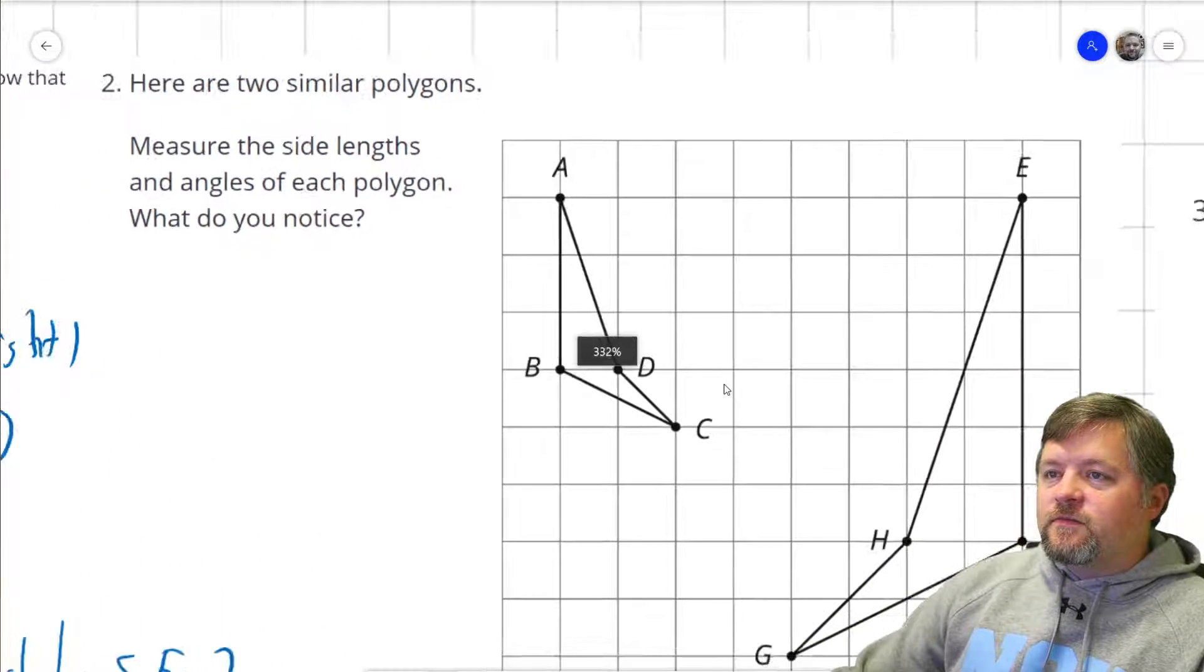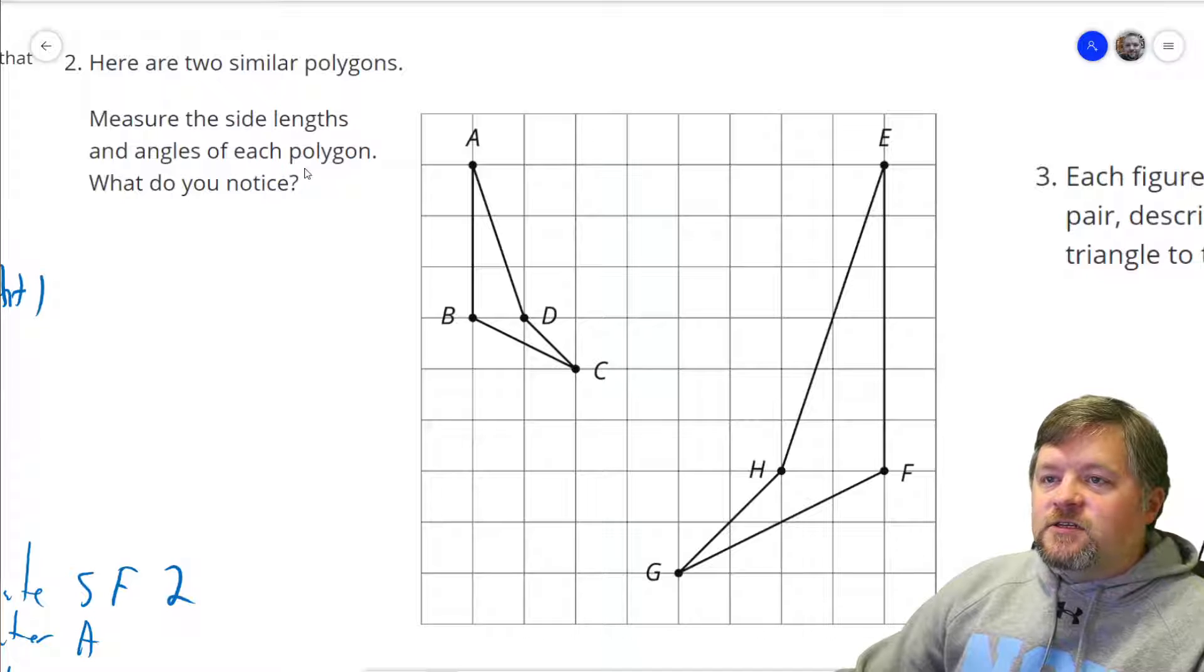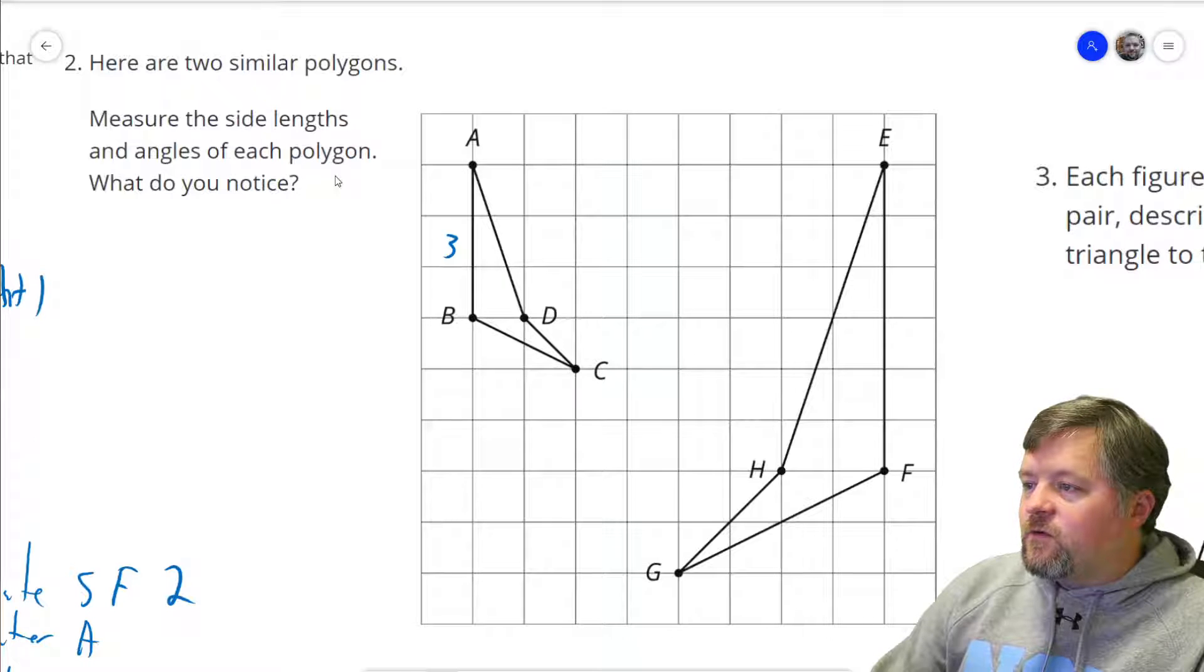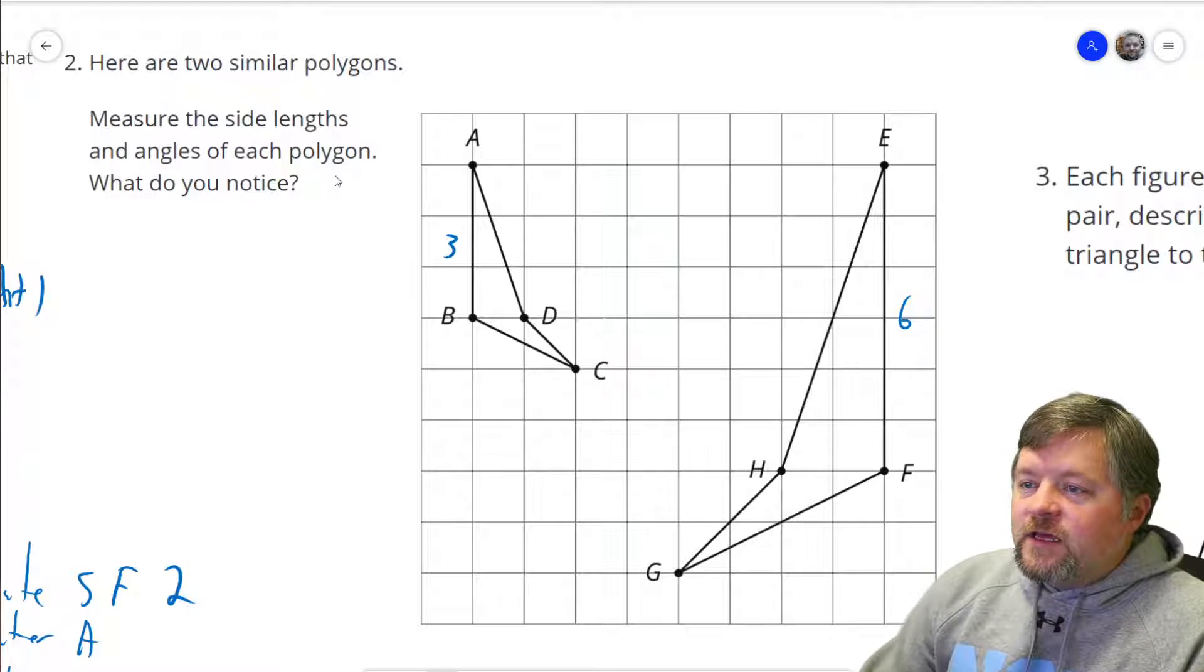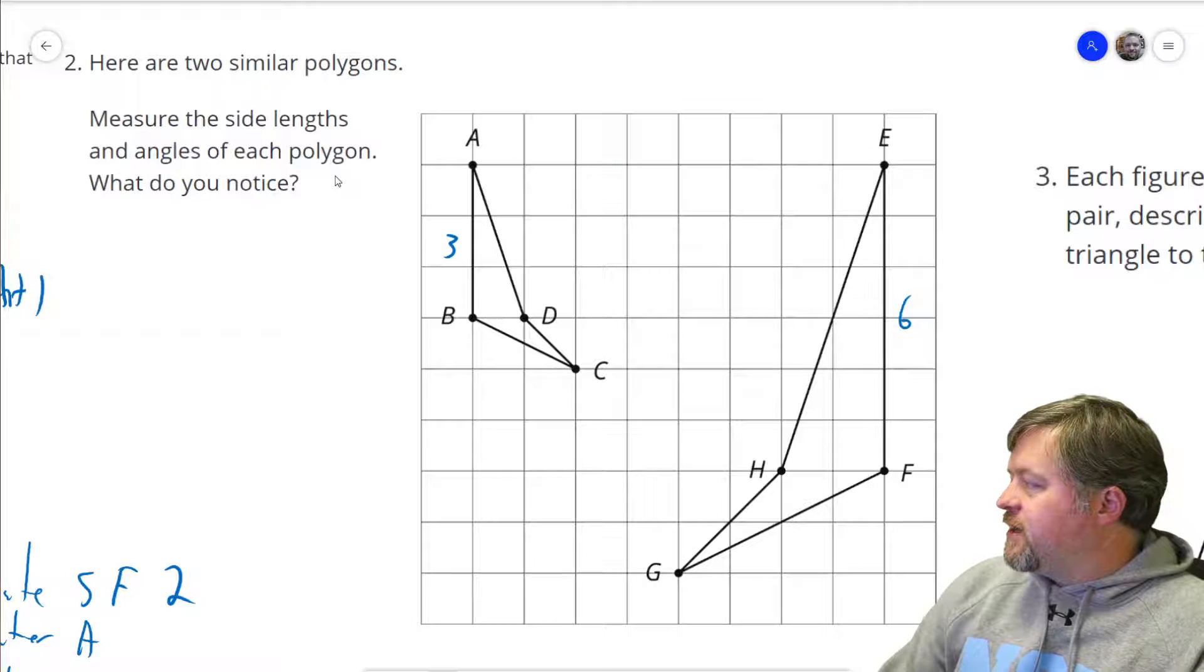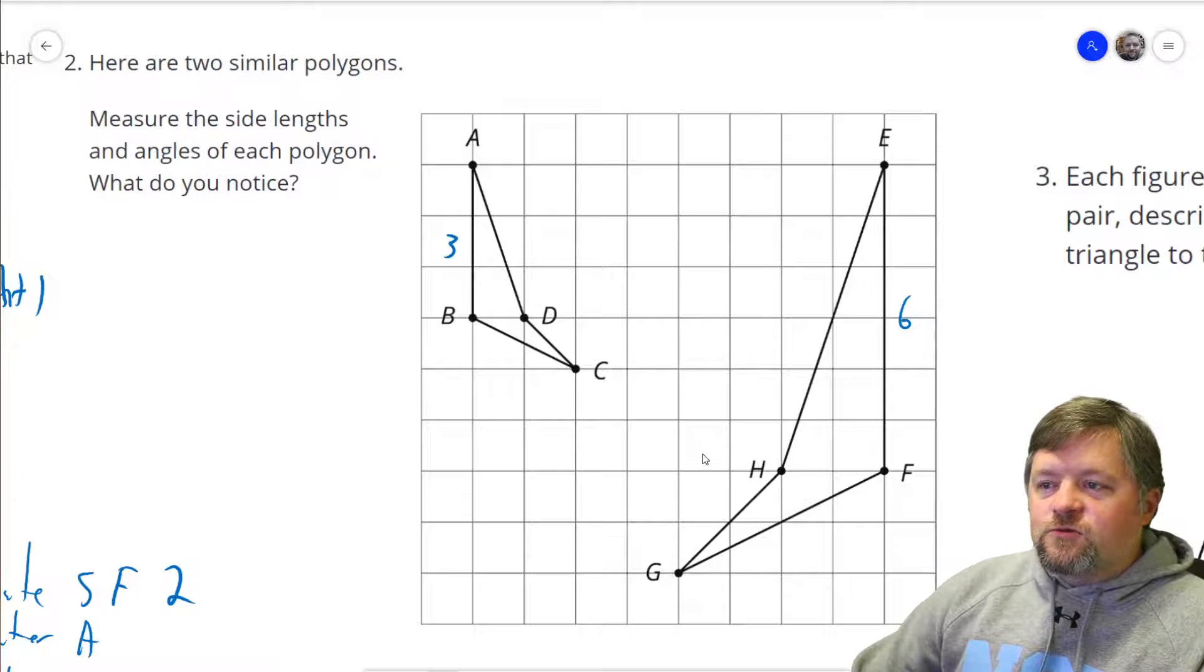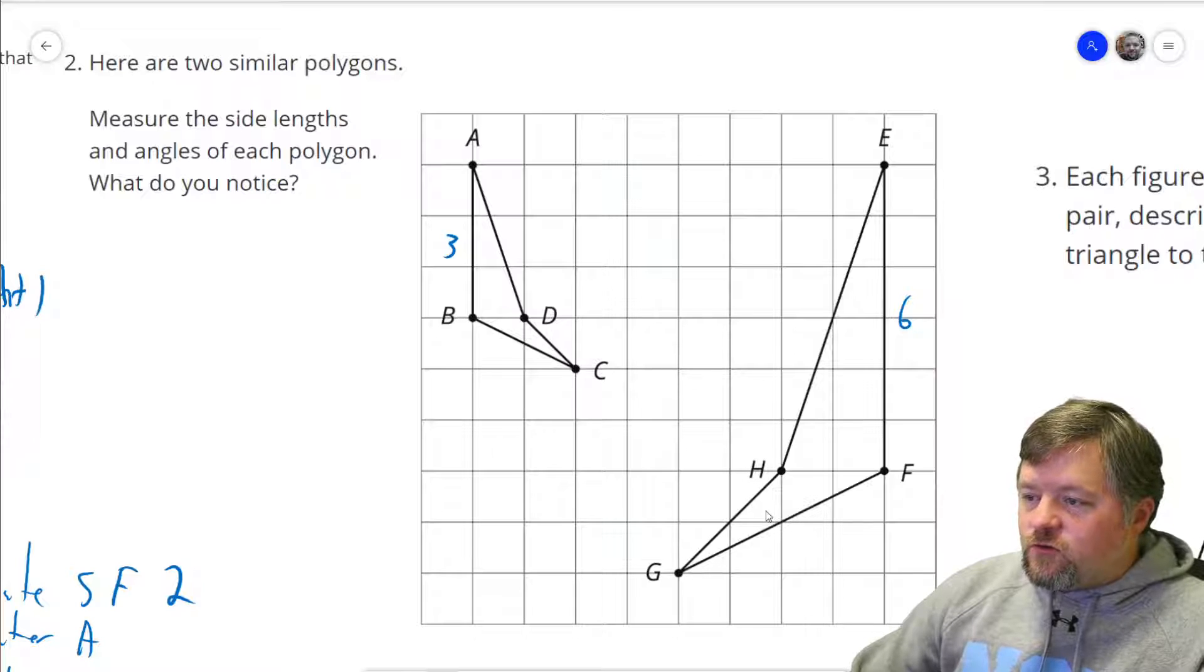Okay, what's our next question? Here are two similar polygons. Measure the side length and angles of each polygon. What do you notice? So, three units. How about this one? Six units. Now if we measure all of these, which you should do on your own, what do you think is going to happen with these lengths compared to these lengths? I bet any length that I find in this short one will be double on this large one. DC is one diagonal unit. Here it is two diagonal units.